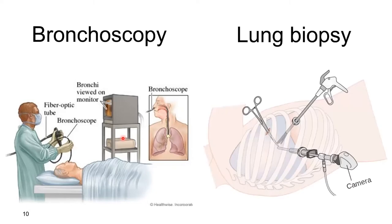When larger pieces of lung are needed for diagnosis — as may be the case with GLILD — a lung biopsy procedure is performed, frequently through a scope under general anesthesia in the operating room. Three small incisions are made; a camera is inserted through one and instruments through the others to obtain biopsies. Patients may have a chest tube in place for a period afterward, but recovery time from this procedure is typically fairly short.